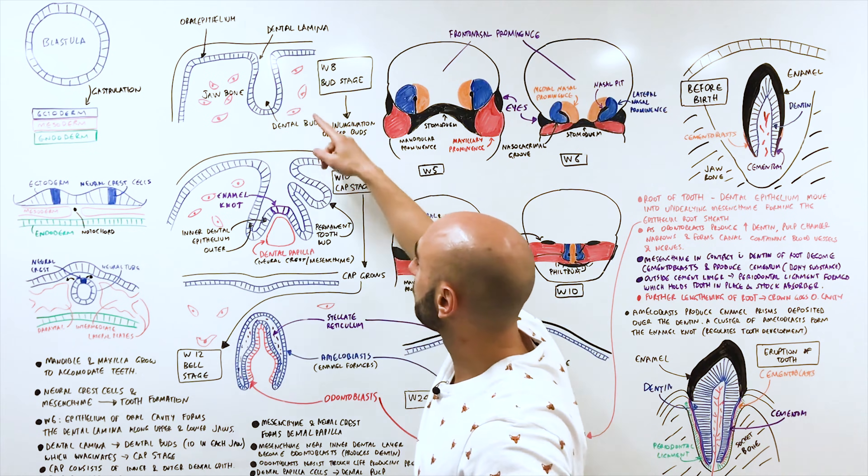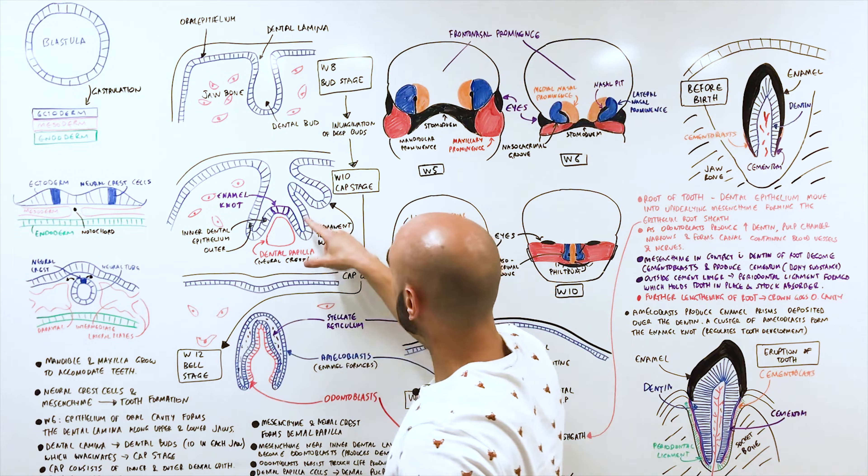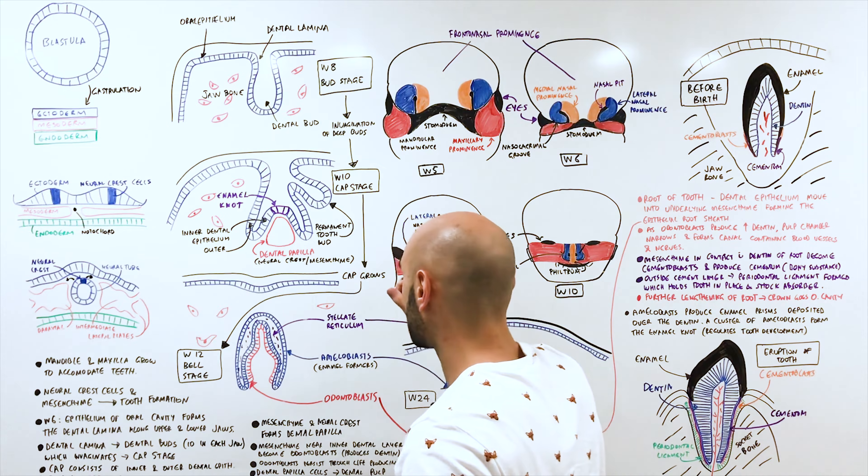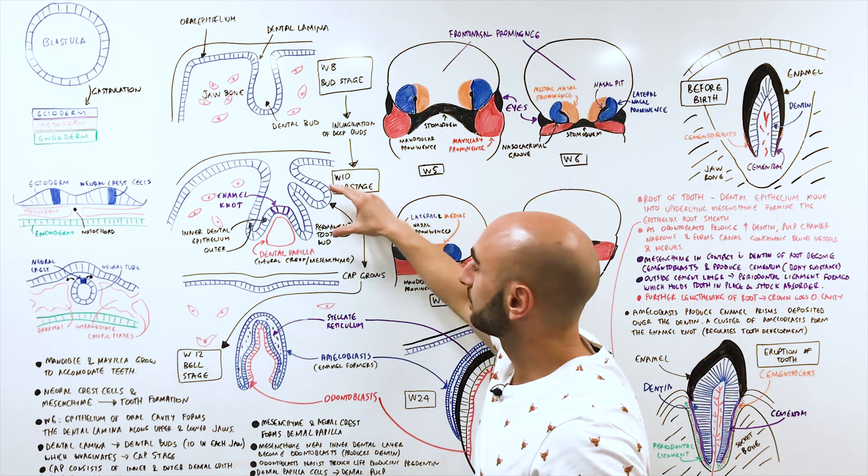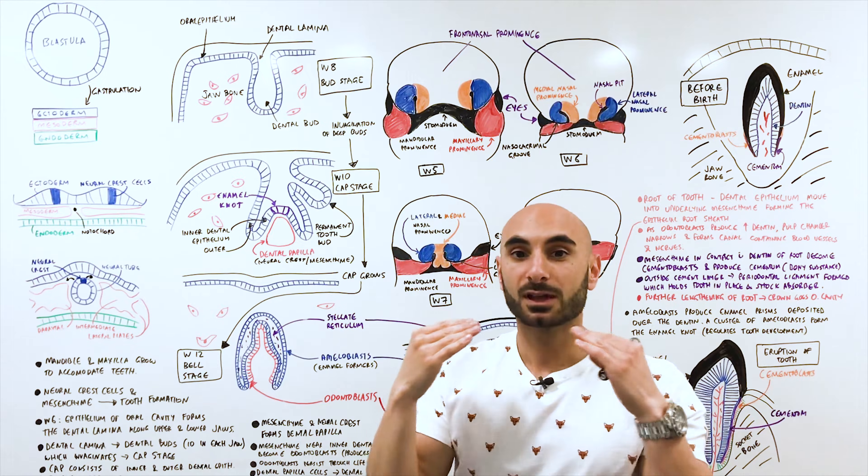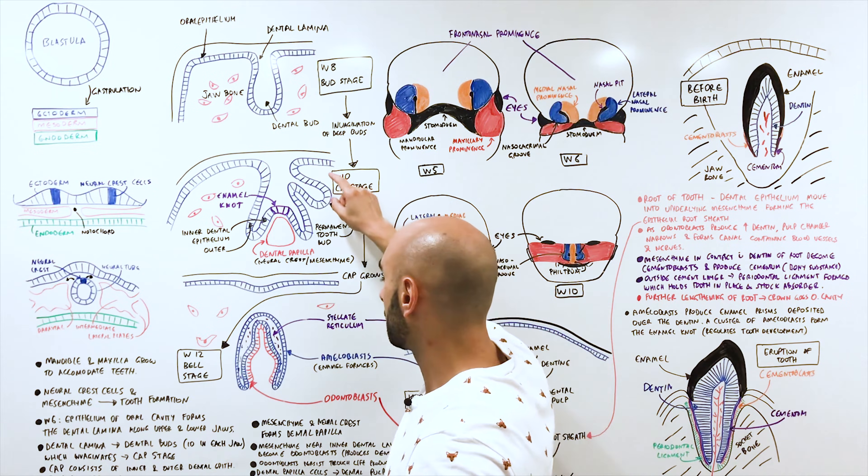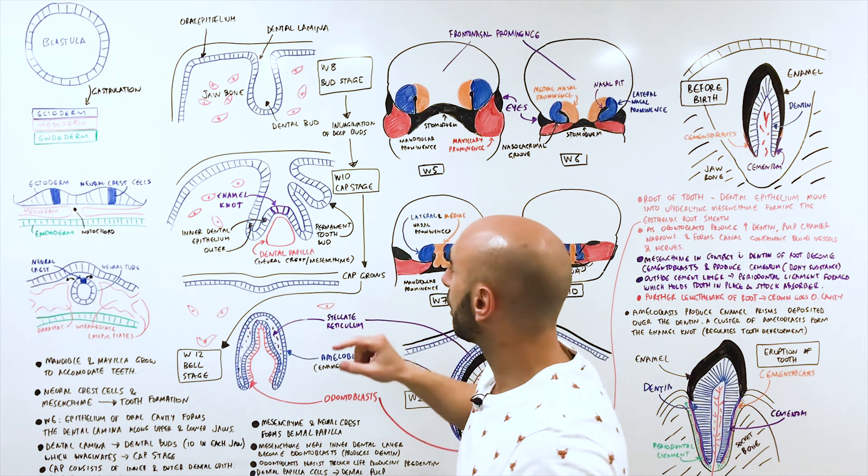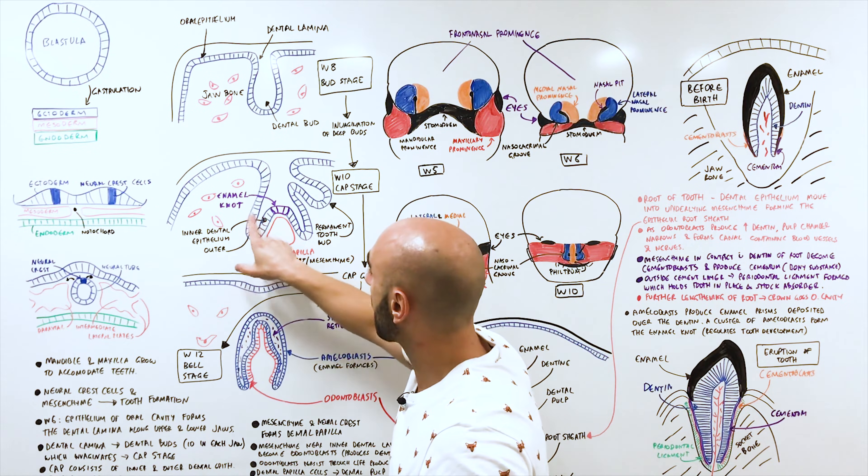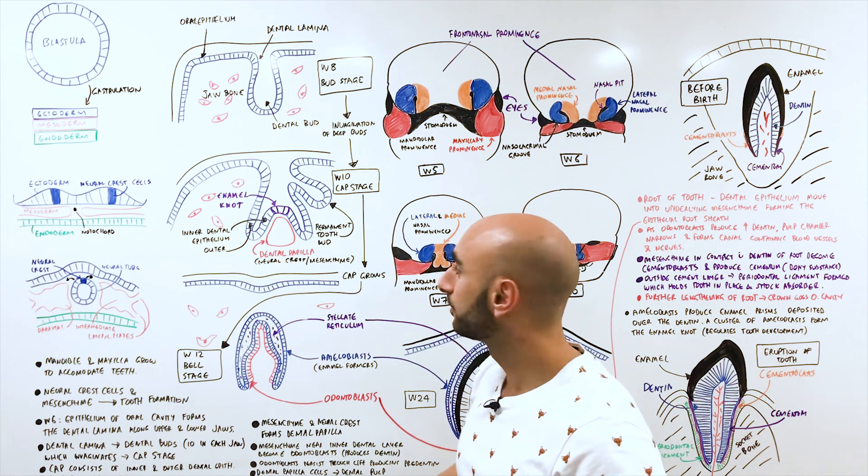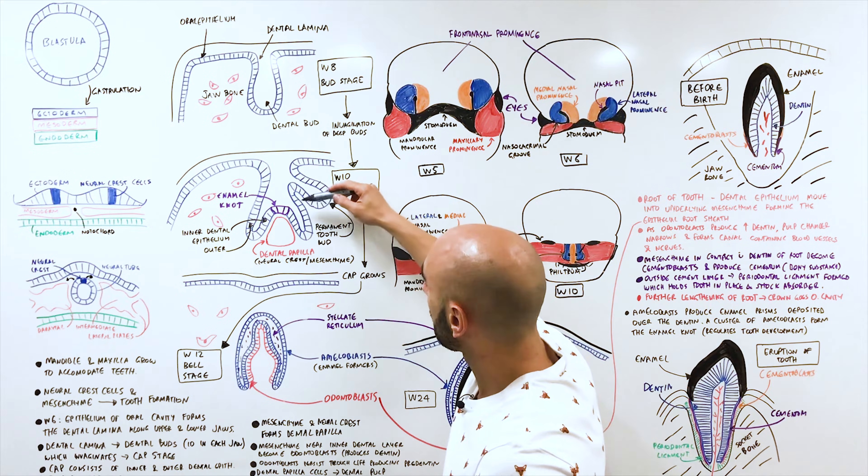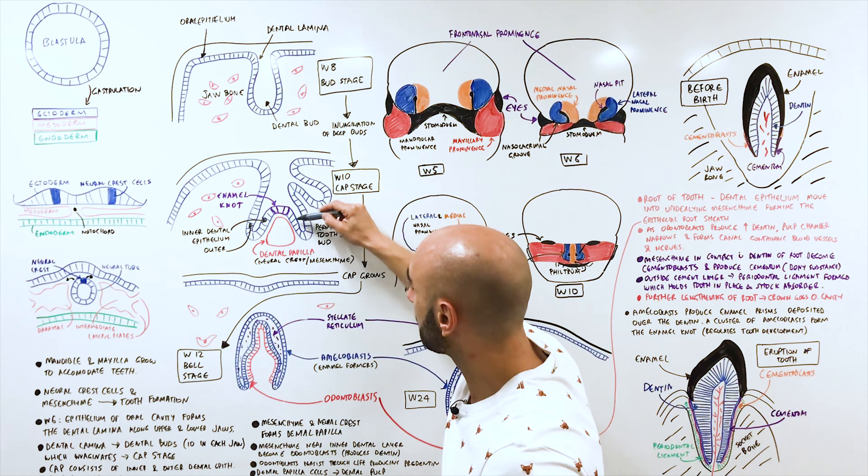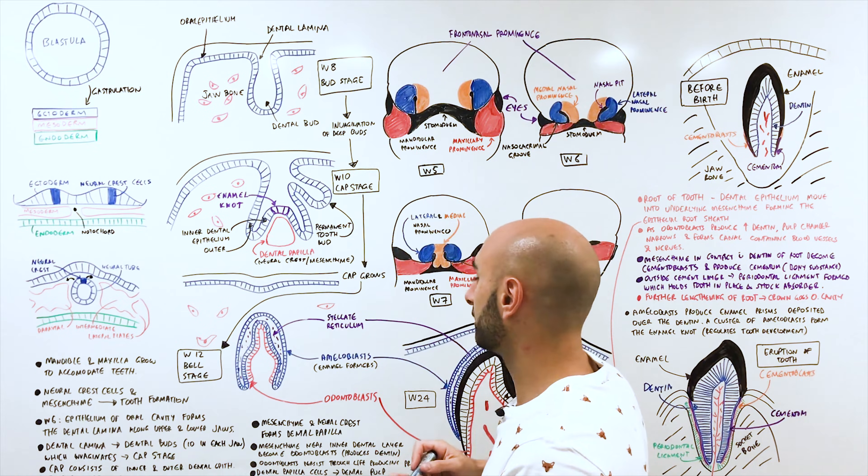Just to quickly recap: week 8 we have the oral epithelium making the dental lamina over the jaw bone. This evagination is the dental bud and further invaginations will lead to the cap stage of teeth development. There are 10 in each jaw, 10 on the top and 10 on the bottom. This cap consists additionally of an inner and an outer dental epithelium.